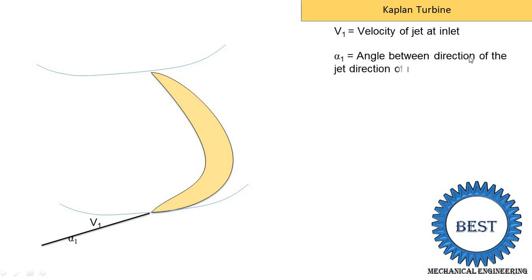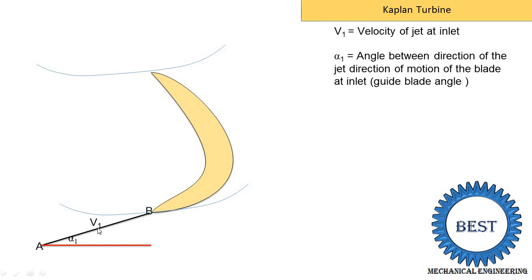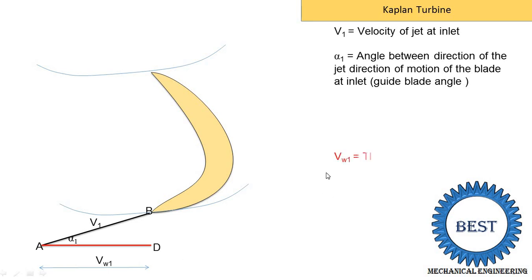Alpha1 is the angle between the direction of the jet and the direction of motion of the blade at inlet — it is also known as the guide vane angle. This line is denoted as AB. When V1 is in the tangential direction, it is simply divided into two parts: one horizontal and one vertical. The horizontal part of V1 is drawn as line AD, known as the velocity of whirl Vw1 — that is, the component of velocity V1 in the horizontal direction.